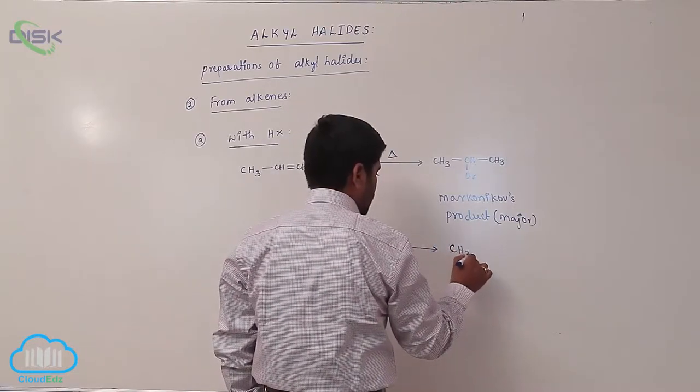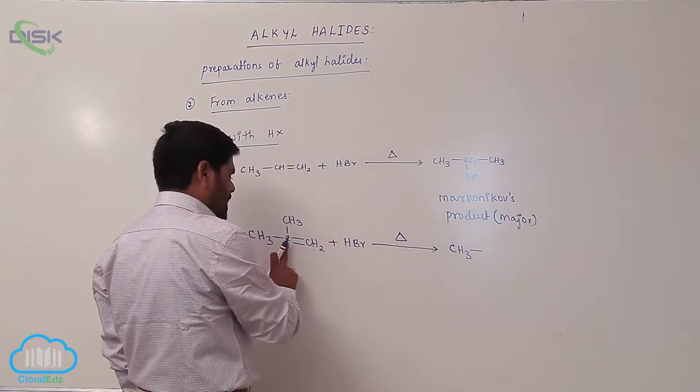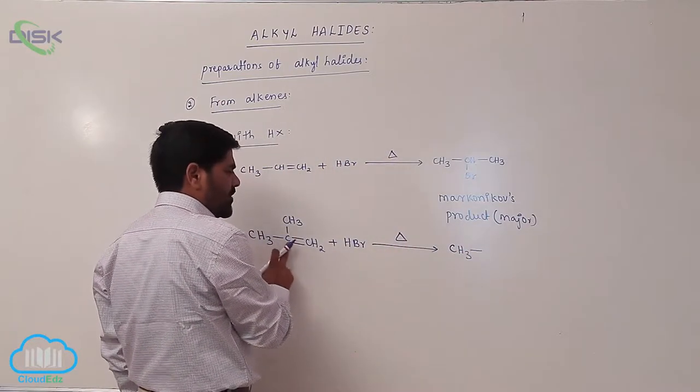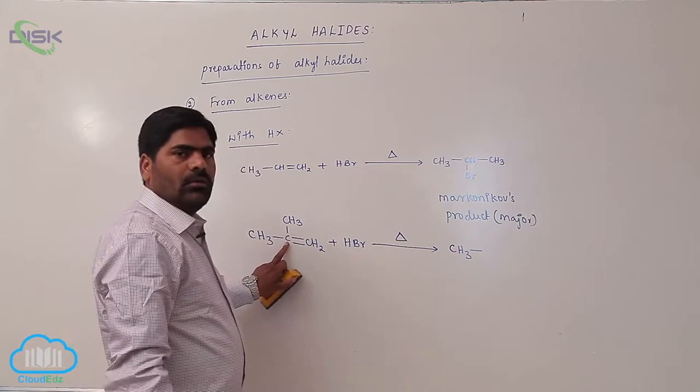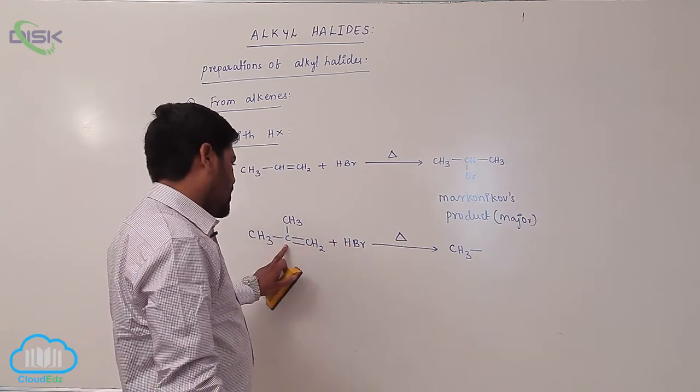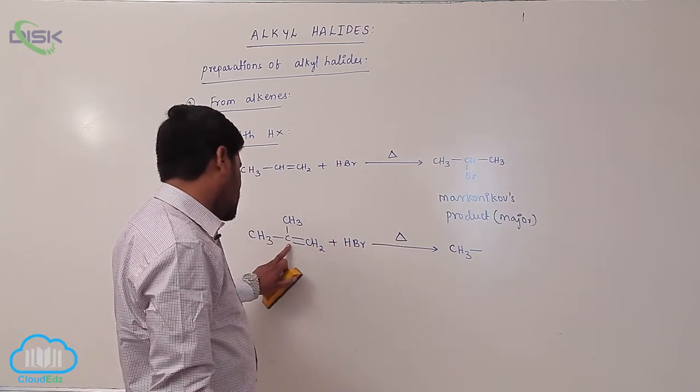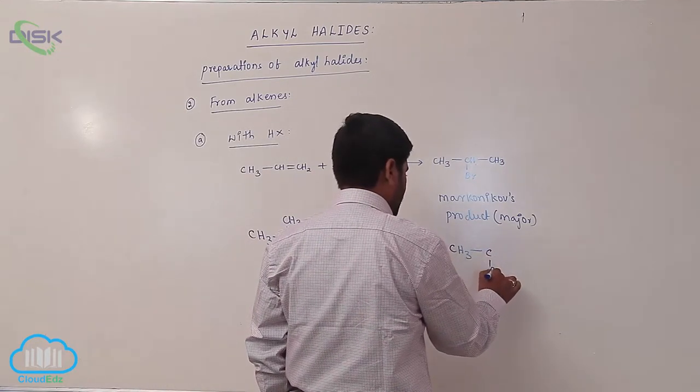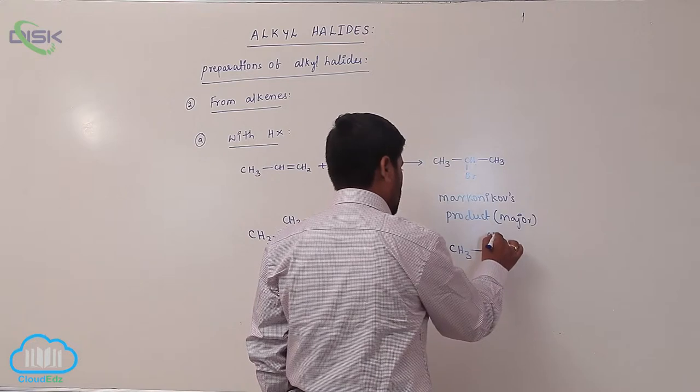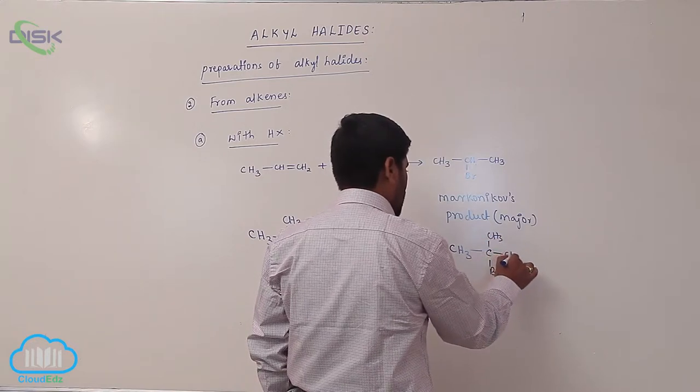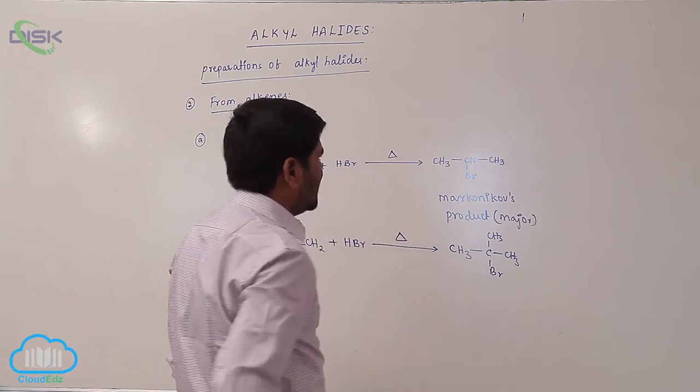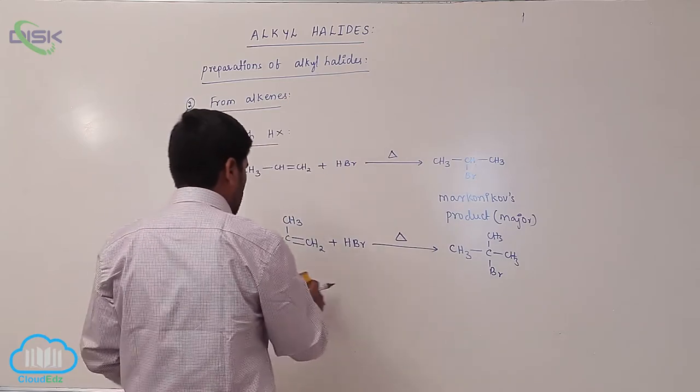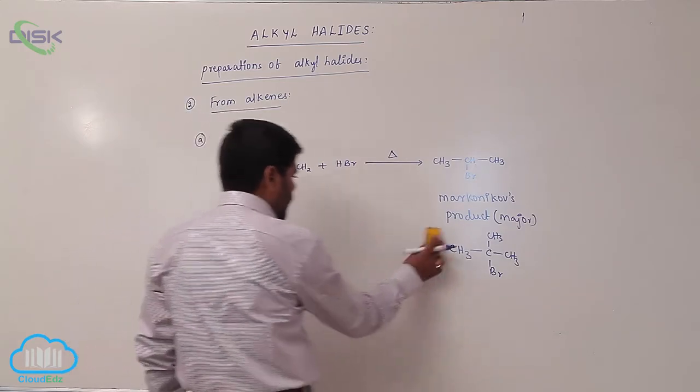Here the double bond carbon atom contains the lesser number of hydrogens, so the Br- addition takes place at this particular carbon. The product has Br with methyl groups, known as tertiary butyl bromide.